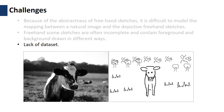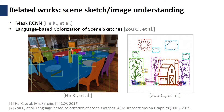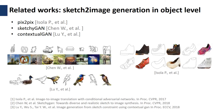Our work was inspired by several existing works. Prior arts in scene-level image and sketch segmentation provide us evidence that it is possible to train a model to segment a scene-level sketch. Although there is no existing approach on image generation from scene sketches, at the object level there have been some efforts, but the quality of the generated images may be unstable and could be improved.